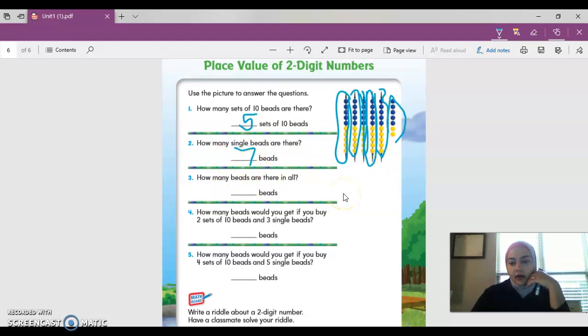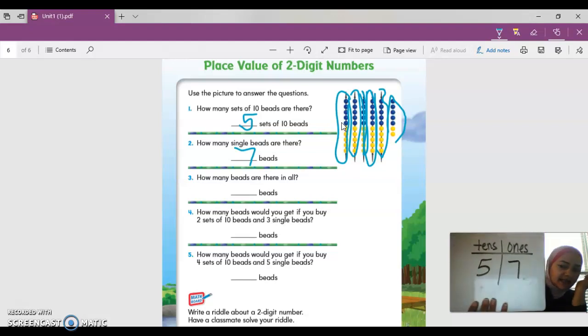How many beads are there in all? Not just tens or ones, but in all. Well, we know if there's five sets of 10 beads, there's five in the tens place. And if there are seven sets of ones beads, then there are seven in the ones place, and that makes the number 57.